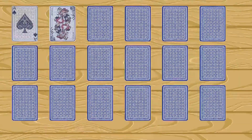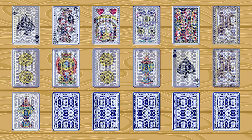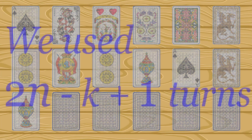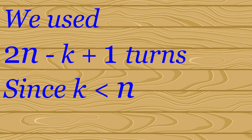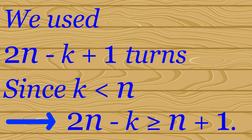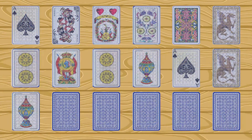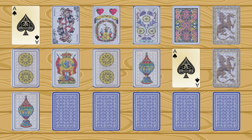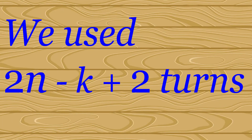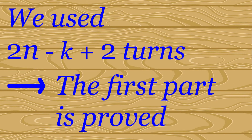Continuing in this way, we can infer the symbols of the first 2N − K cards. At this point, we have used 2N − K + 1 turns. Since K is smaller than N, we know the symbols of at least N + 1 cards. Since there are N different symbols, there must be 2 cards with the same symbol for which we know their locations. Hence, after using another turn where these 2 cards are chosen, the player is guaranteed to win. The total number of turns is 2N − K + 2, which proves the first part of our assertion.